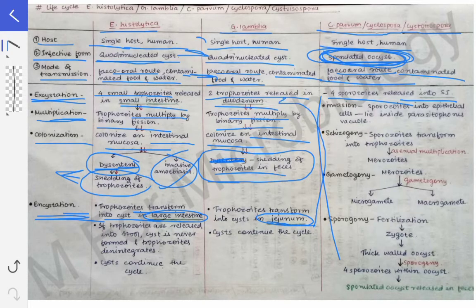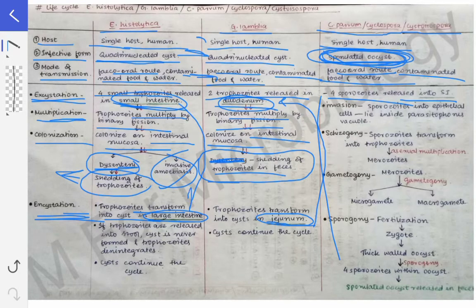In the case of Giardia lamblia, the cyst formation occurs in the jejunum. Why the jejunum? Because the release of trophozoites was in the duodenum, and after the duodenum the next part of the small intestine is the jejunum — that is why cyst formation in Giardia lamblia occurs in the jejunum. In histolytica, the trophozoites were released in the small intestine, so cyst formation occurs in the large intestine, since the large intestine comes after the small intestine.